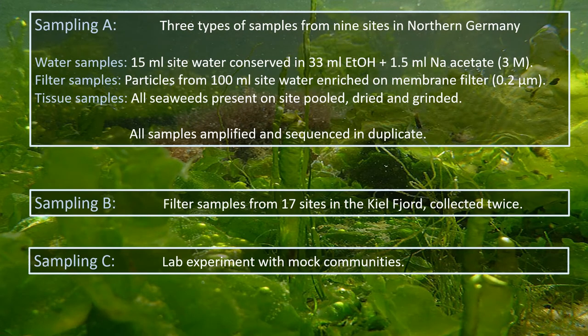To test our methodology, we collected three test sample sets. Sample set A included samples from nine sites in northern Germany, and at each site we collected water samples, filter samples, and tissue samples. Water samples were conserved with ethanol and sodium acetate. Filter samples were enriched on membrane filters with a pore size of 0.2 micrometers, and tissue samples were lyophilized and ground. All samples were amplified and sequenced in duplicate, resulting in a set of 54 samples.